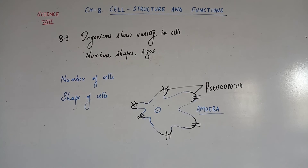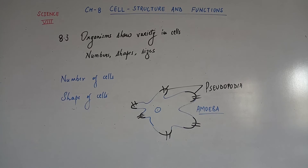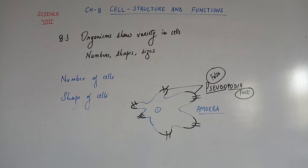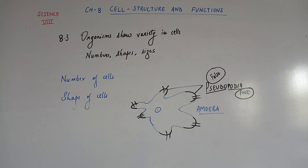These projections are called pseudopodia, in which 'pseudo' means false and 'podia' means feet. As the amoeba moves or feeds, these projections can appear and disappear. Amoeba has no definite shape unlike other organisms — it keeps on changing its shape. Observe the projections of varying lengths protruding out of its body; these are called pseudopodia.